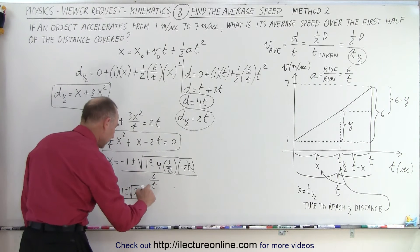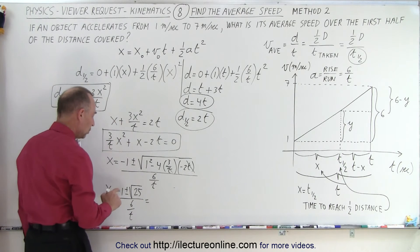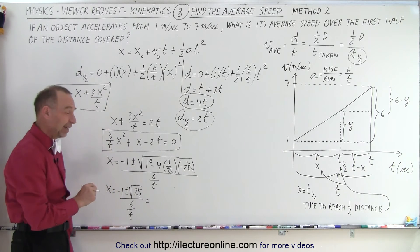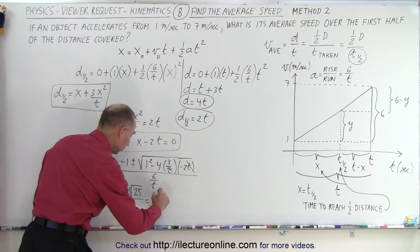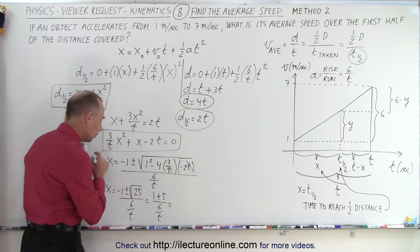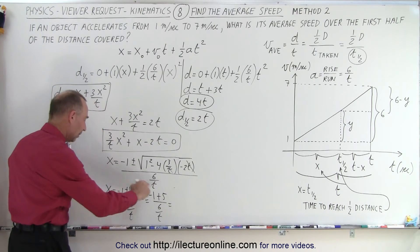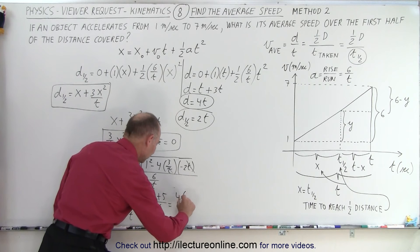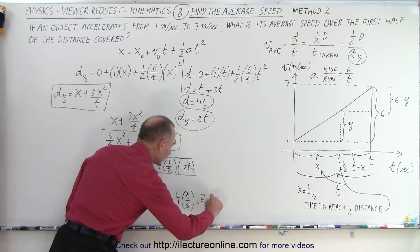This gives us X = (−1 + 5) / (6/T). We discard the negative root since time cannot be negative. So X = 4 × T/6, which equals 2/3 T. This tells us the time to reach the halfway point is two-thirds of the total time T.